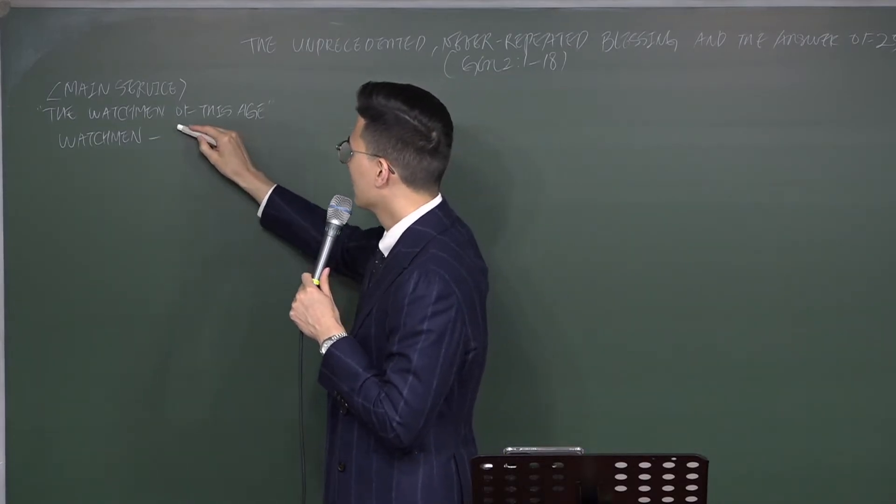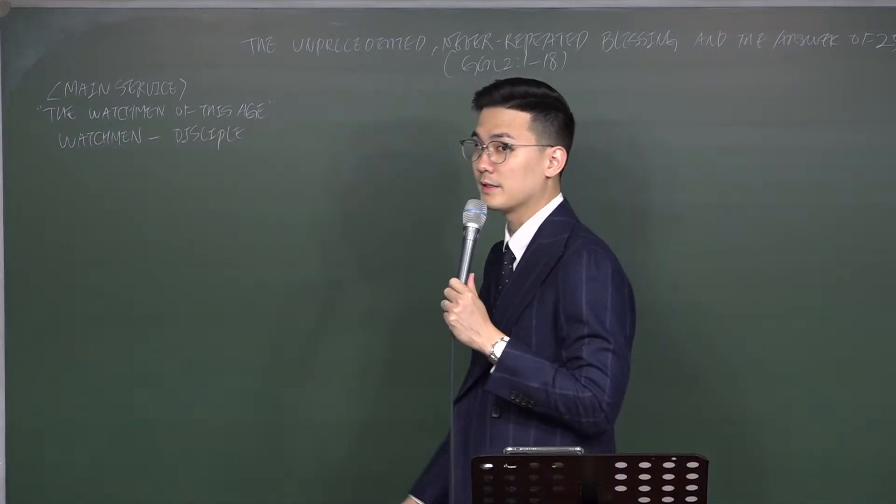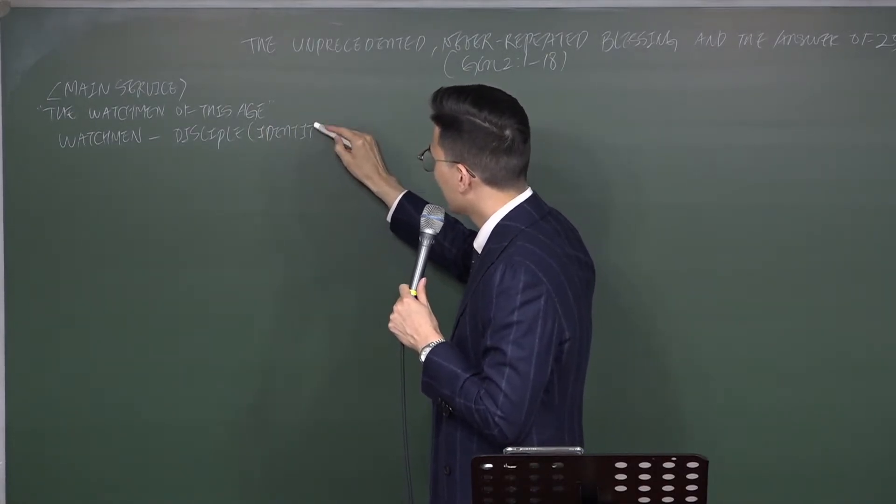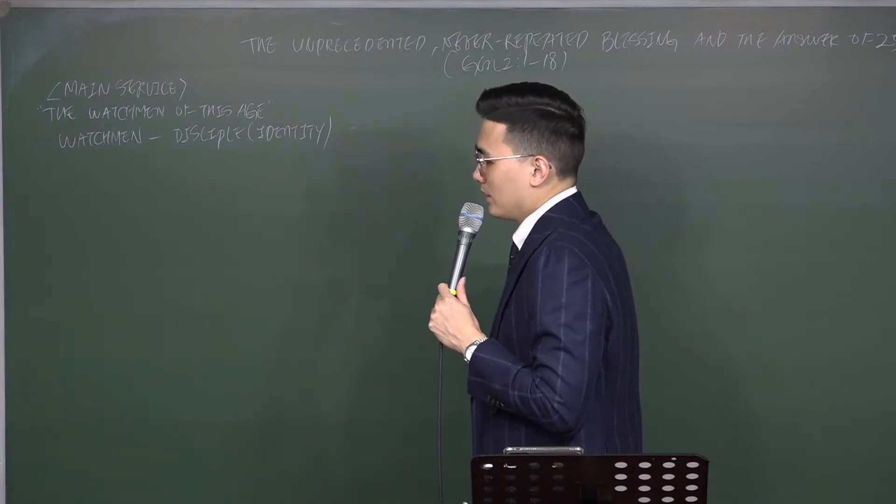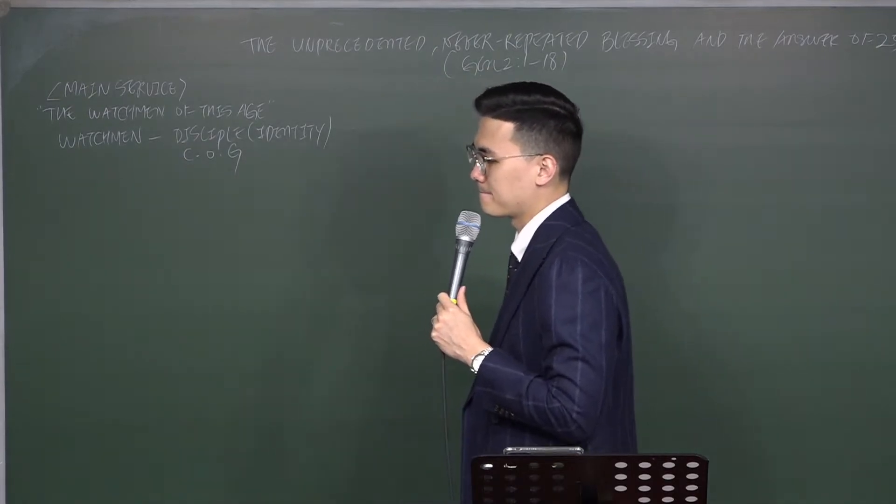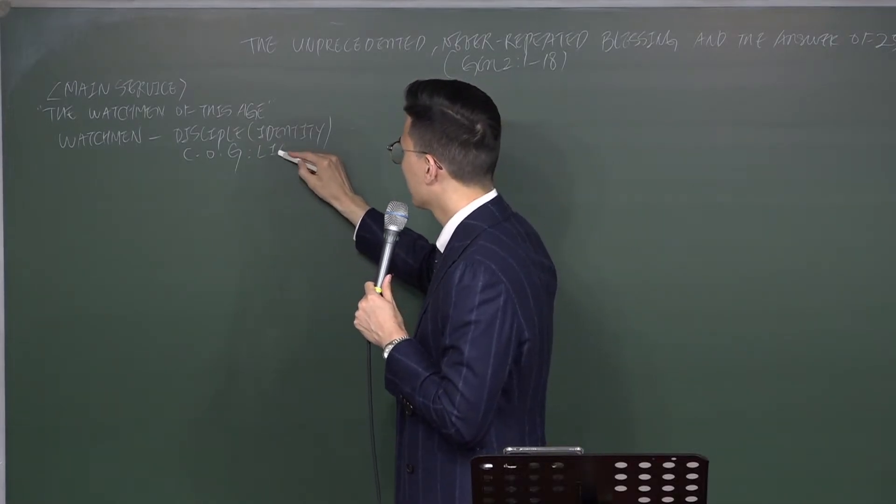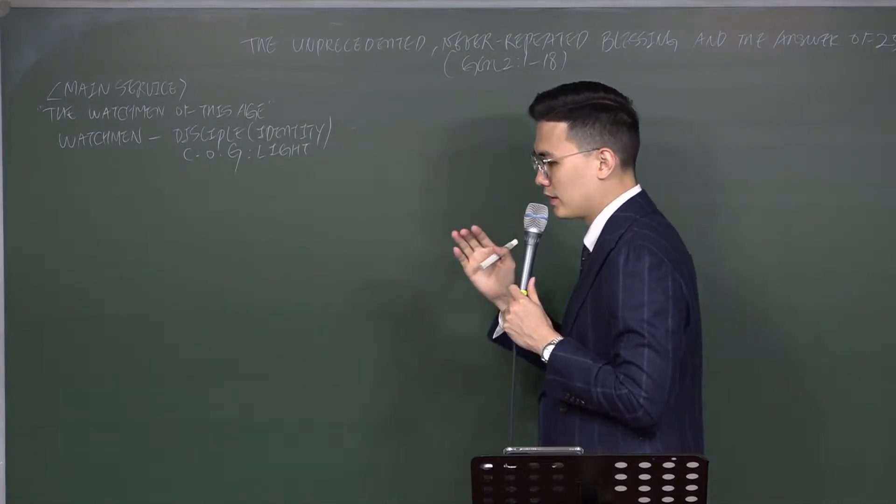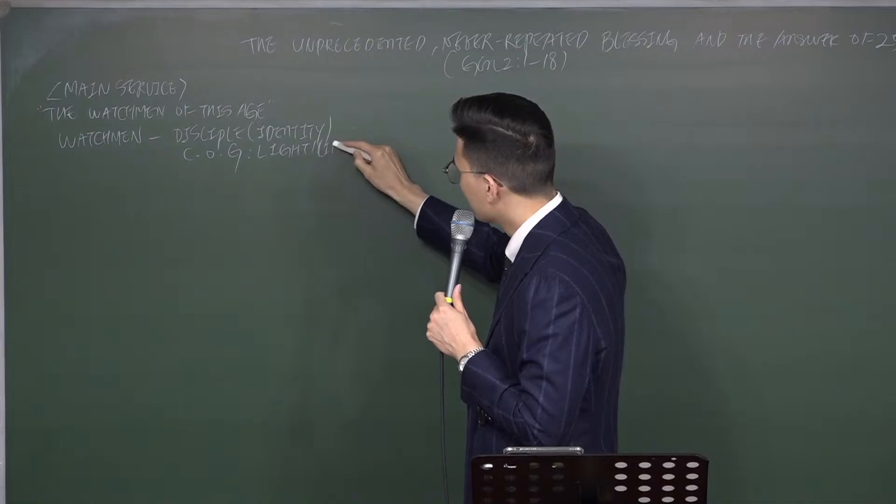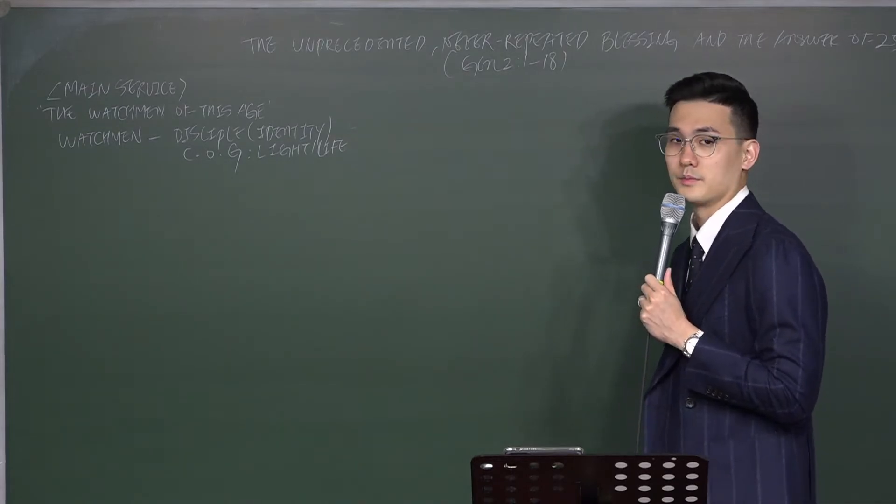Let me briefly explain what is watchman. Watchman is the disciple. In other words, it is your identity. As a disciple, your identity is children of God. That's why you have the light. The light that Christ gave to you has life. That's why you are the platform.